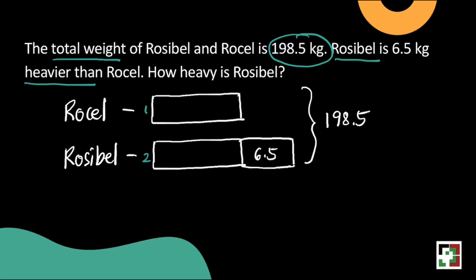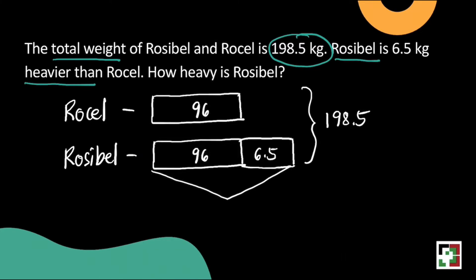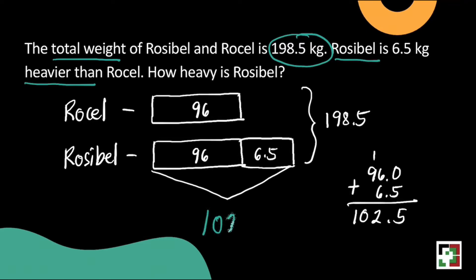We have to divide 192 into 2 boxes because we have 2 empty boxes there — so 192 divided by 2 gives us 96. We'll put 96 in each box, but we have to find the weight of Rosseville by adding 96 and 6 and 5 tenths. We get 102 and 5 tenths. That's the weight of Rosseville, and it's our final answer.